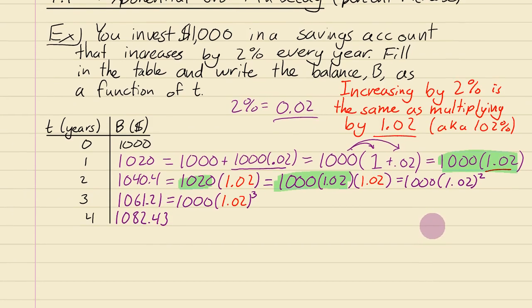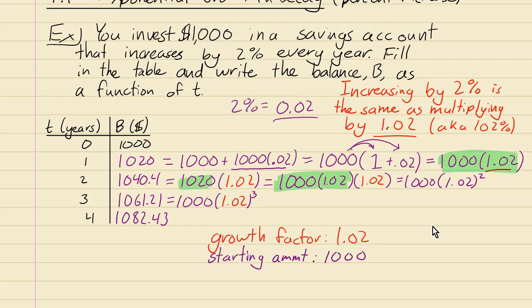So the growth factor that we're looking for is 1.02. So when you know the starting amount, when t equals 0 and you know the growth factor, we can write this as B equals a times b to the t, but the a is 1,000 and the b to the power t becomes 1.02 to the power t. So that is a formula for B in terms of t.